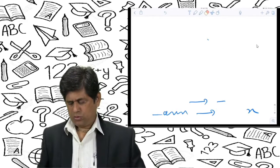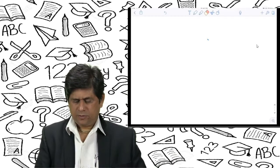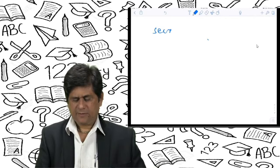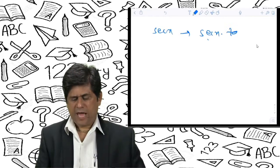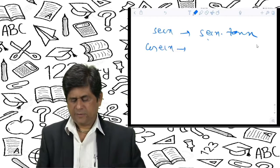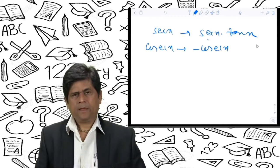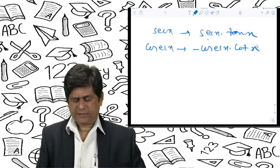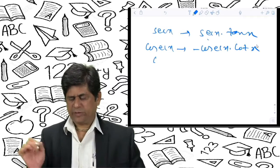Now some more trigonometric functions. The derivative of sec x is sec x · tan x. The derivative of cosec x is −cosec x · cot x. The derivative of cot x is −cosec²x.